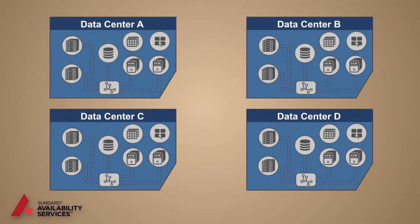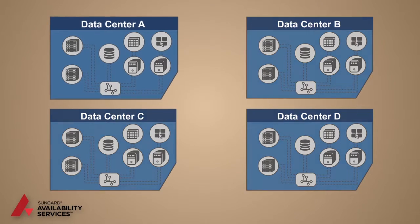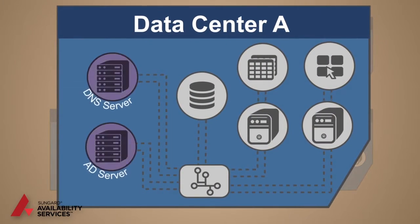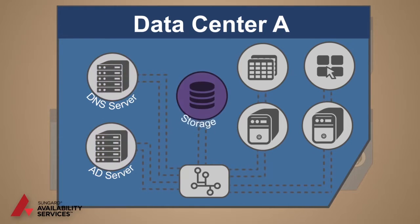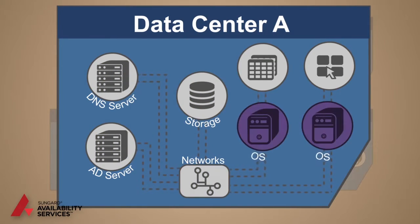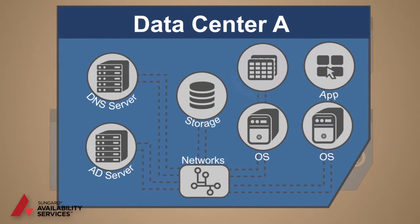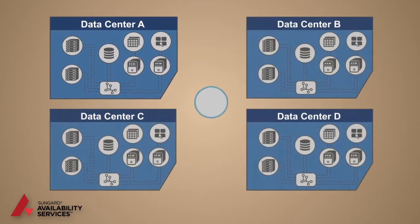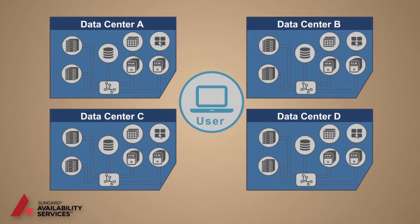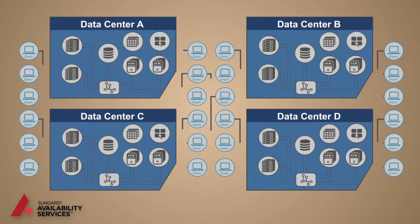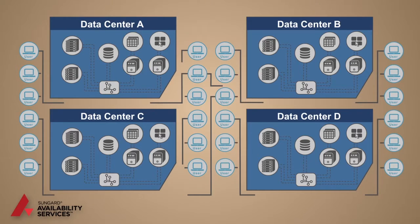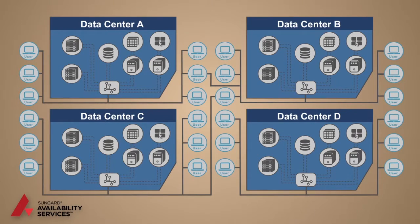Like most businesses, your environment is comprised of one or more production data centers with servers, storage, networks, operating systems, applications, and databases, all of which are necessary to run your business. Under normal operations, your users connect to one or more data centers, accessing the network and generating and consuming data, resulting in a multitude of connections and components in your production environment.